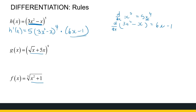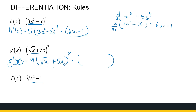For the next example, raised to the power 9, the outside function is the power 9, so the derivative is 9 times 'that thing' to the power 8, times the derivative of that thing. The inside is √x + 5x, so the derivative is 1 over 2√x plus 5.